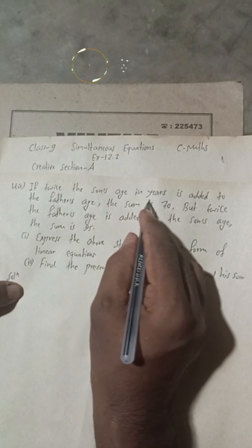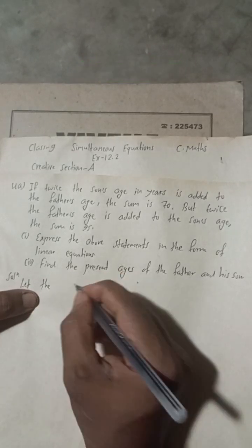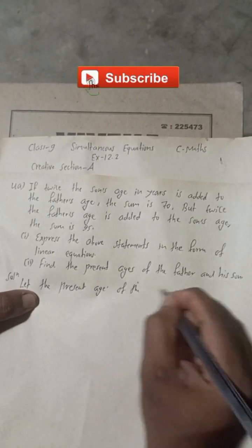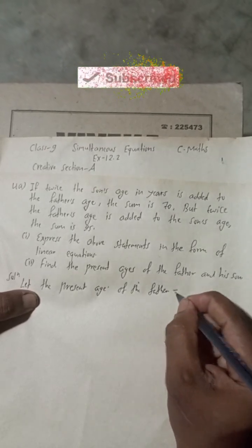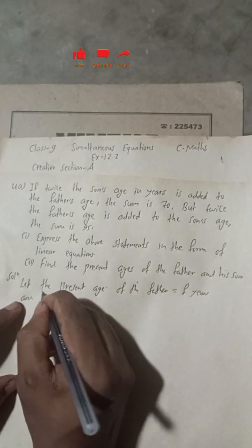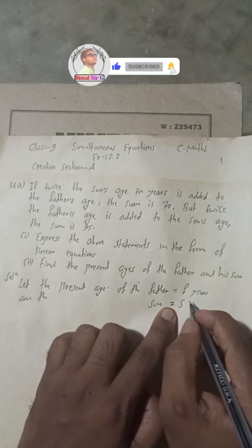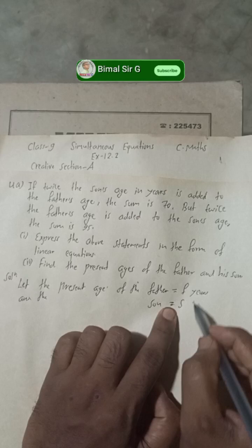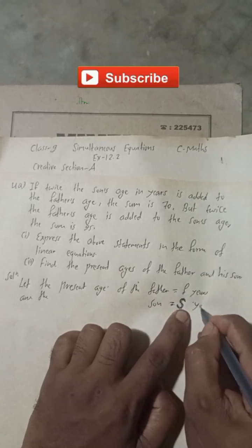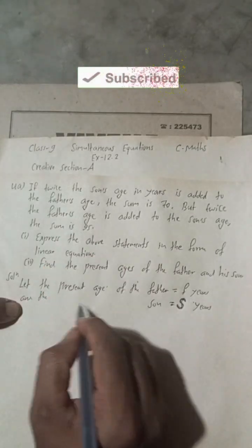Let the present age of the father be F years, and the present age of the son be S years. We write these as our variable definitions to proceed with the solution.